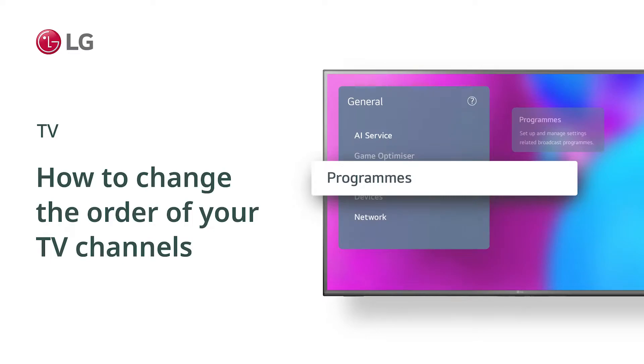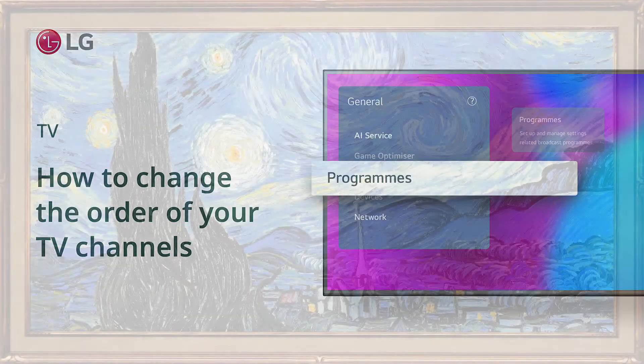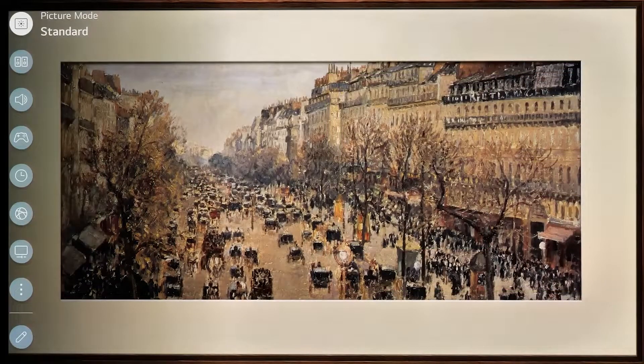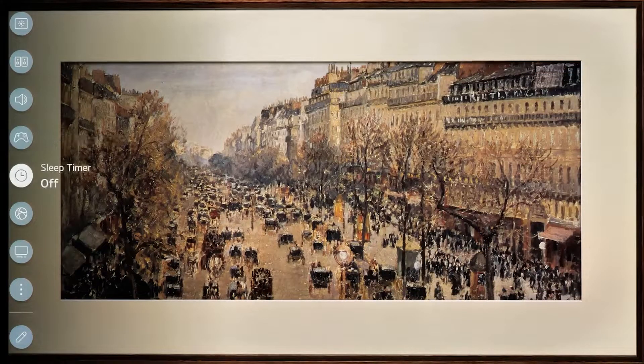How to change the order of your TV channels. From the Settings menu, select the All Settings option.